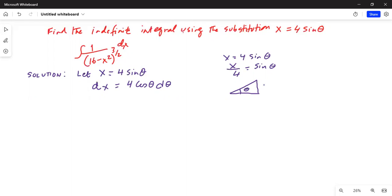sin theta is opposite side, which is x, divided by the hypotenuse, 4. So if the opposite side is x and the hypotenuse is 4, this side using the Pythagorean theorem will be square root of 16 minus x square.